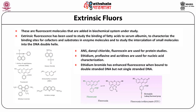We discuss extrinsic fluorescence — fluorescent molecules that are adapted into the biochemical system under study. Extrinsic fluorescence has been used to study binding of fatty acids to serum albumin, to characterize binding sites of cofactors and substrates in enzyme molecules, and to study molecular interactions. Well-known extrinsic fluorophores include ANS, dansyl chloride, fluorescein, aminomethylcoumarin, ethidium bromide, and acridine orange. ANS, dansyl chloride, and fluorescein are used for protein studies; ethidium bromide, riboflavin, and acridine are used for nucleic acid characterization. Ethidium bromide has enhanced fluorescence when bound to double-stranded DNA but does not bind to single-stranded DNA.